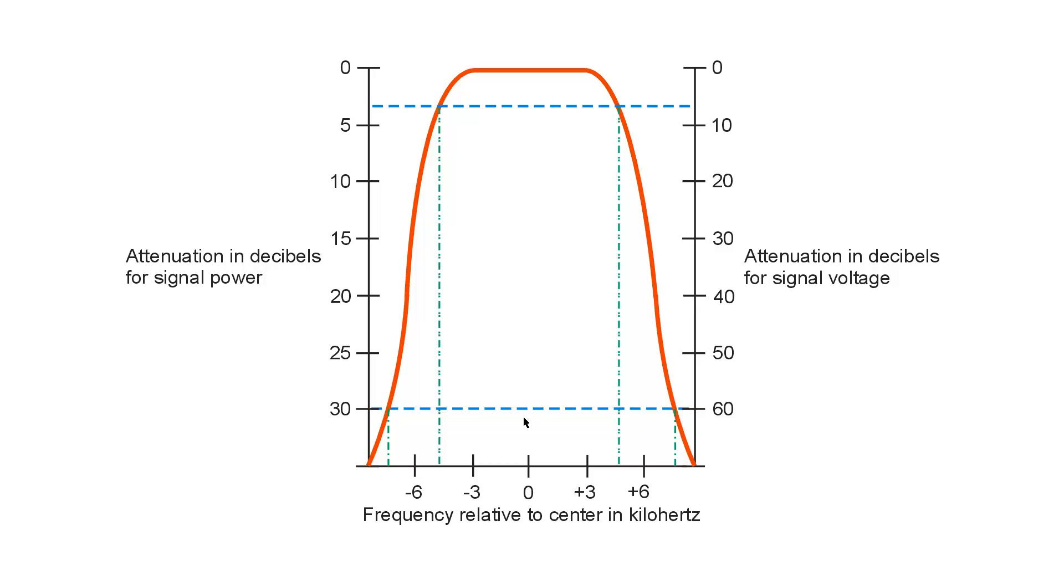that's a pretty low shape factor indicating steep skirt selectivity. If the shape factor were higher, this lower bandwidth here at 60 or 30 decibels were much wider, then the skirts would be shallower.